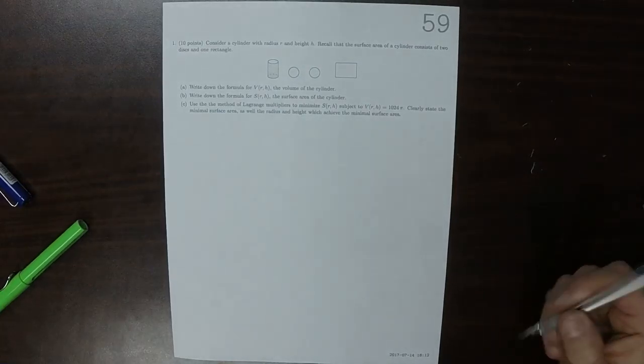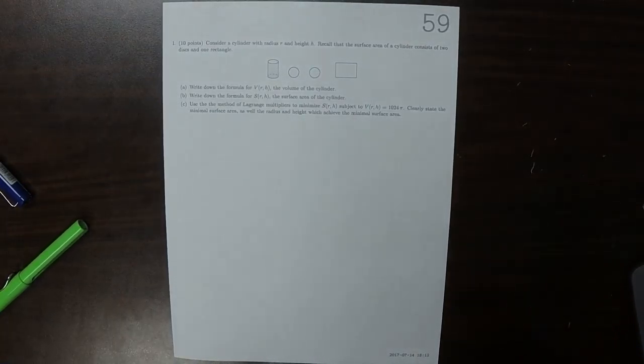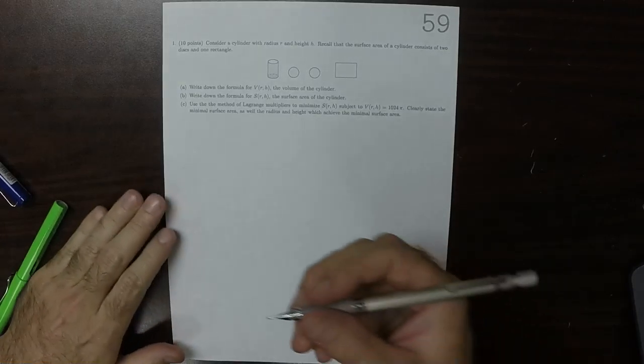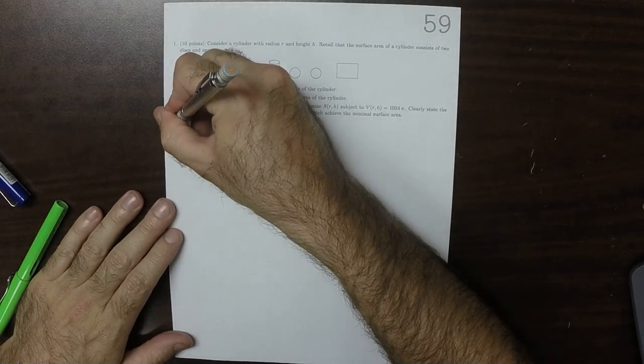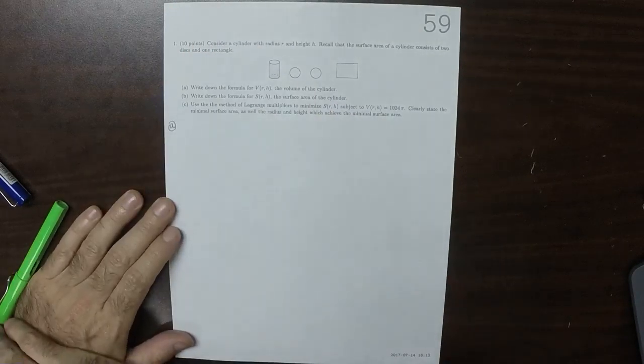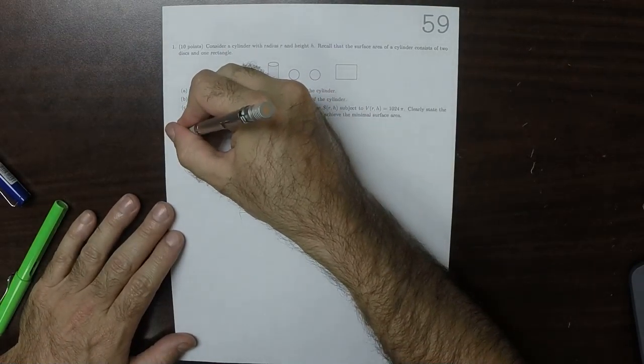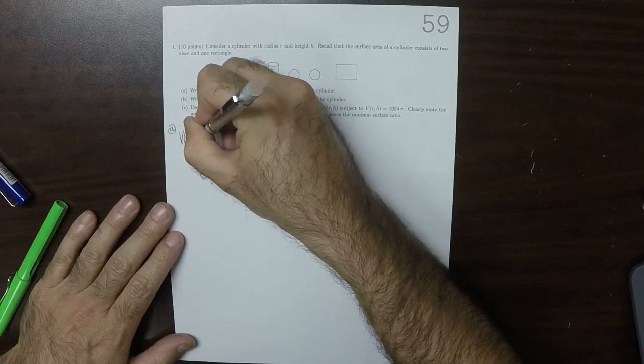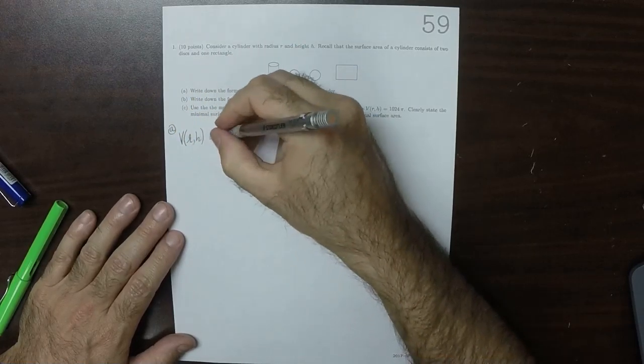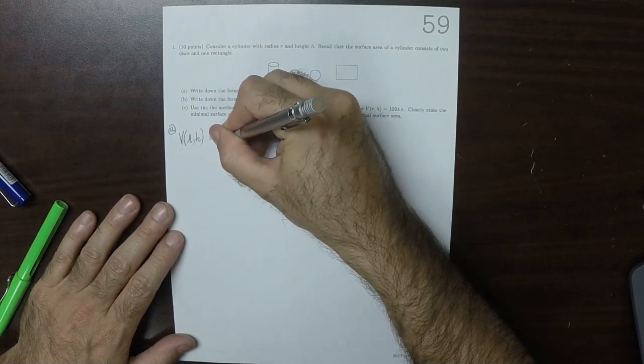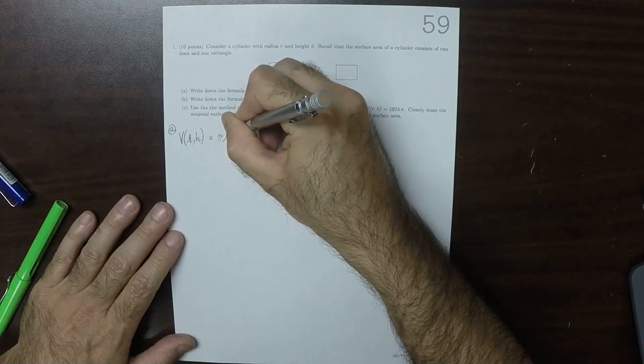This is the solution to Written Homework 59. Part A, the volume as a function of r and h is pi r squared h.